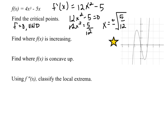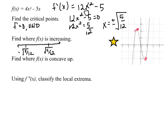That corresponds to this maximum and this minimum. To do sign analysis and know where f is increasing or decreasing, let me put these on the number line: negative square root of 5/12 and positive square root of 5/12. Plugging in something very negative, 12 times a negative number squared is positive and bigger than 5, so we get a positive. Plugging in zero, 12 times zero squared minus 5 is negative.